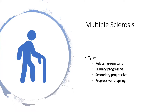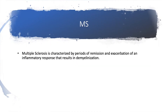MS is characterized by periods of remission and exacerbation, which helps categorize it into four different types: relapsing-remitting, primary progressive, secondary progressive, and progressive relapsing. The inflammatory response results in random or patchy areas of plaque in the white matter of the CNS, defining multiple sclerosis through periods of demyelination.